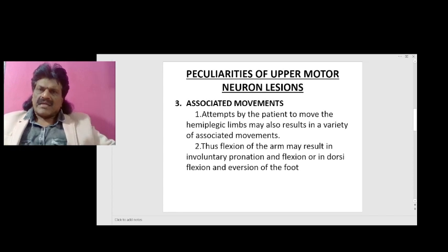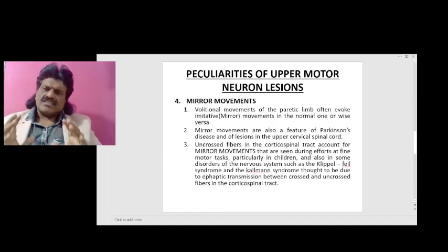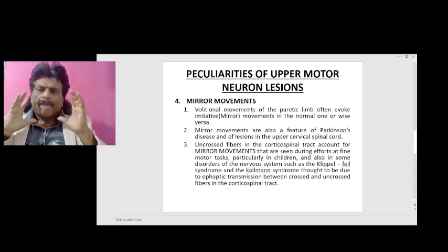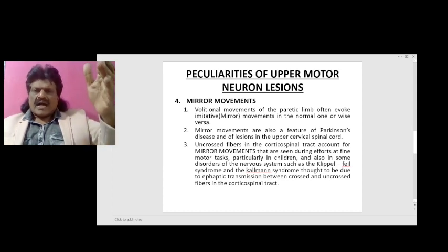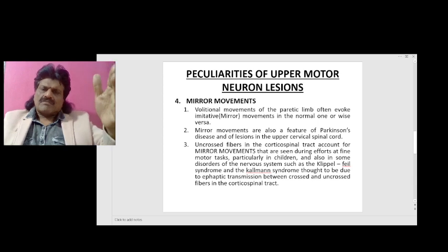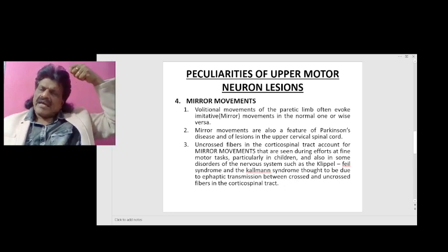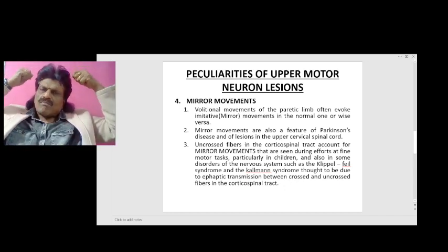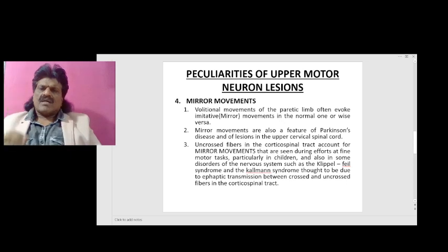Next is the most fascinating topic: mirror movements — one of the peculiarities of upper motor neuron lesions. What exactly are mirror movements? When a person tries to move one upper limb, the other upper limb also moves automatically and assumes the same position. For example, when I try to comb my hair with one hand, the other hand also goes up automatically.